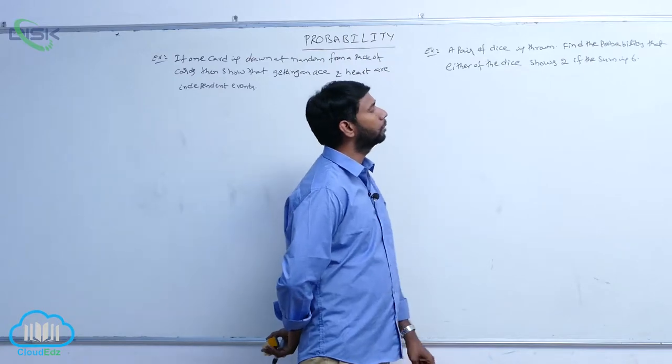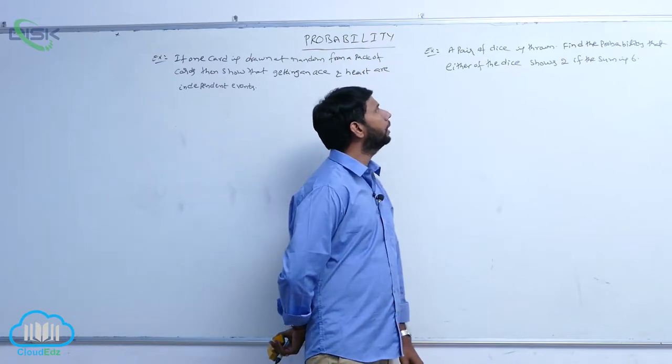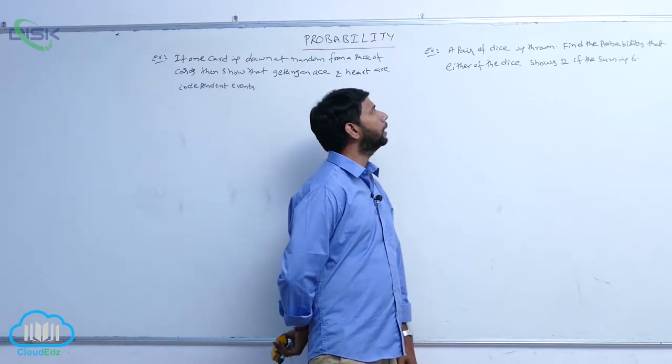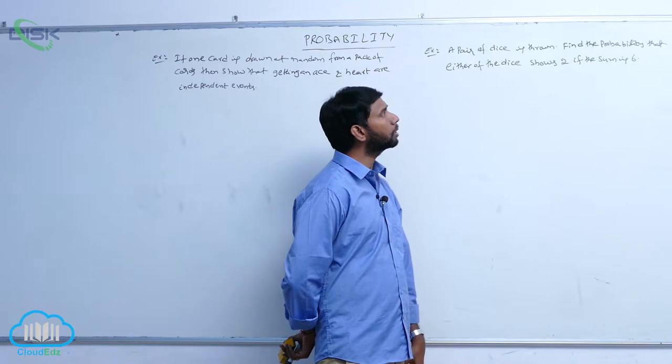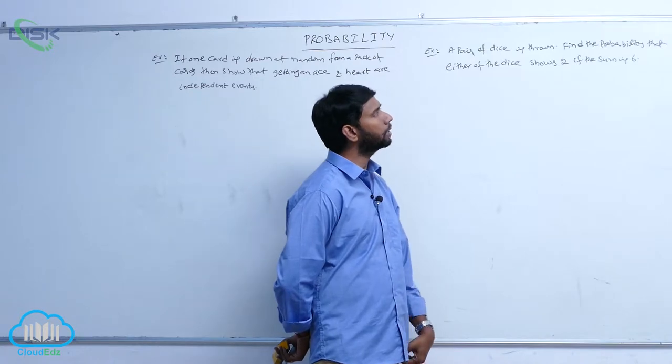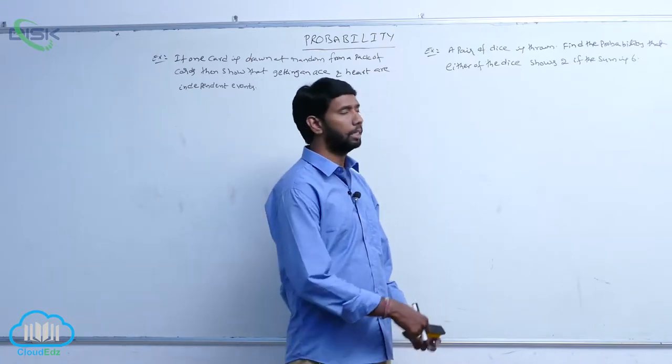When a pair of dice is thrown, find the probability that either of the dice shows 2, given that the sum is 6.